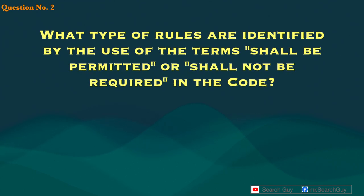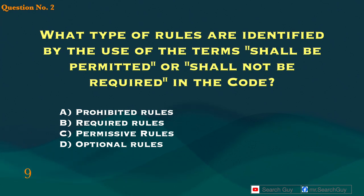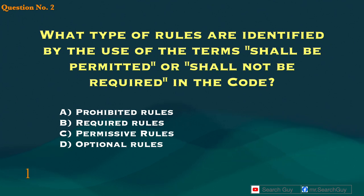Question 2. What type of rules are identified by the use of the terms 'shall be permitted' or 'shall not be required' in the code? A. Prohibited rules. B. Required rules. C. Permissive rules. D. Optional rules. Answer: C. Permissive rules.